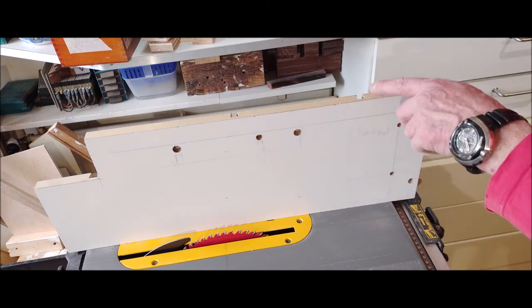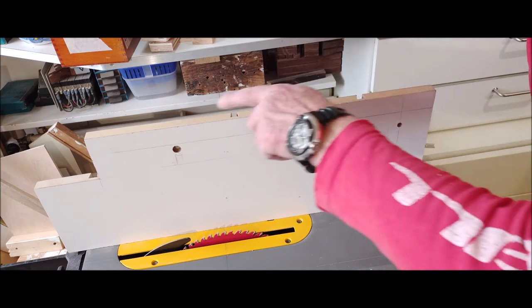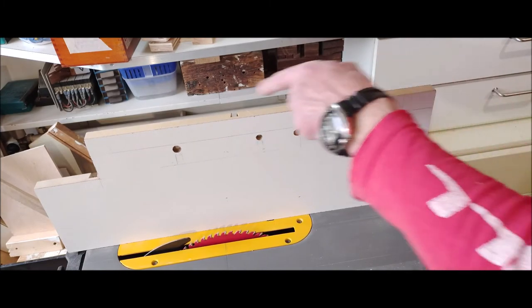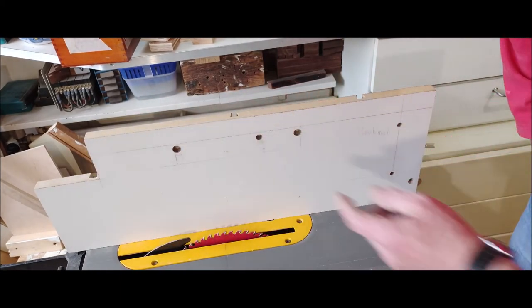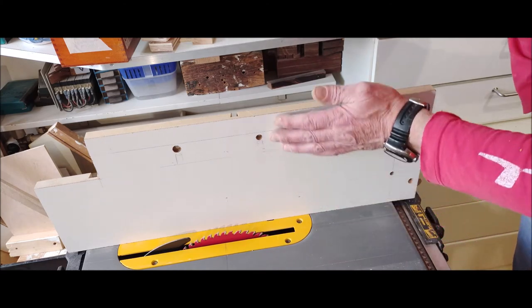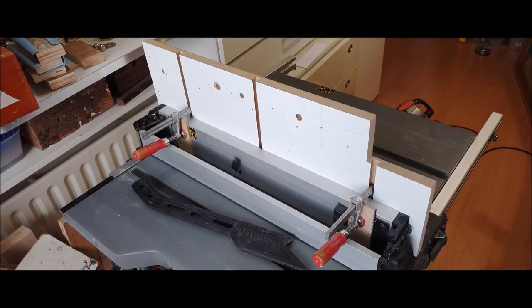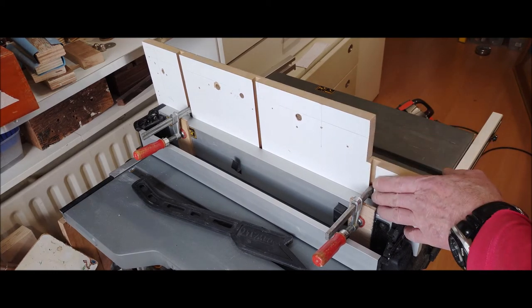That is done with the Festool clamps in the backside and the trapezium slots. This one is perpendicular to the blade now. Here you see the backside of the fence.